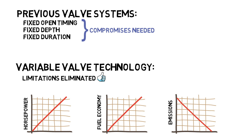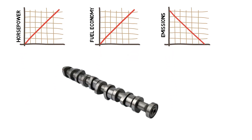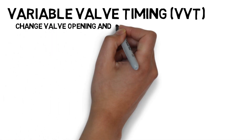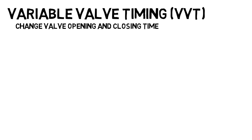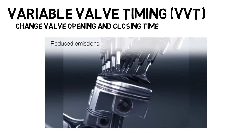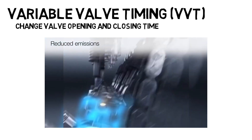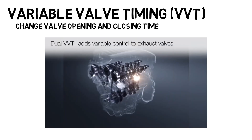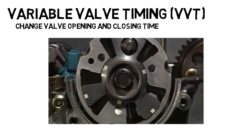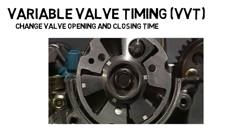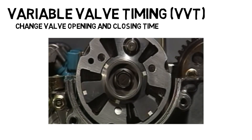As camshafts rotate, they use lobes to push down against valves to open them. Therefore, the lobe shape and position play a crucial role in the engine's characteristics. Variable valve timing, or VVT, enables us to change the valve opening and closing time. There are several methods to achieve it, but the overall idea is to shift the camshaft independently from the crankshaft. A popular method is by means of oil pressure. These VVT mechanisms have several chambers separated in the middle, and the ECU can fill or drain either side using an oil control valve to advance or retard valve timing.